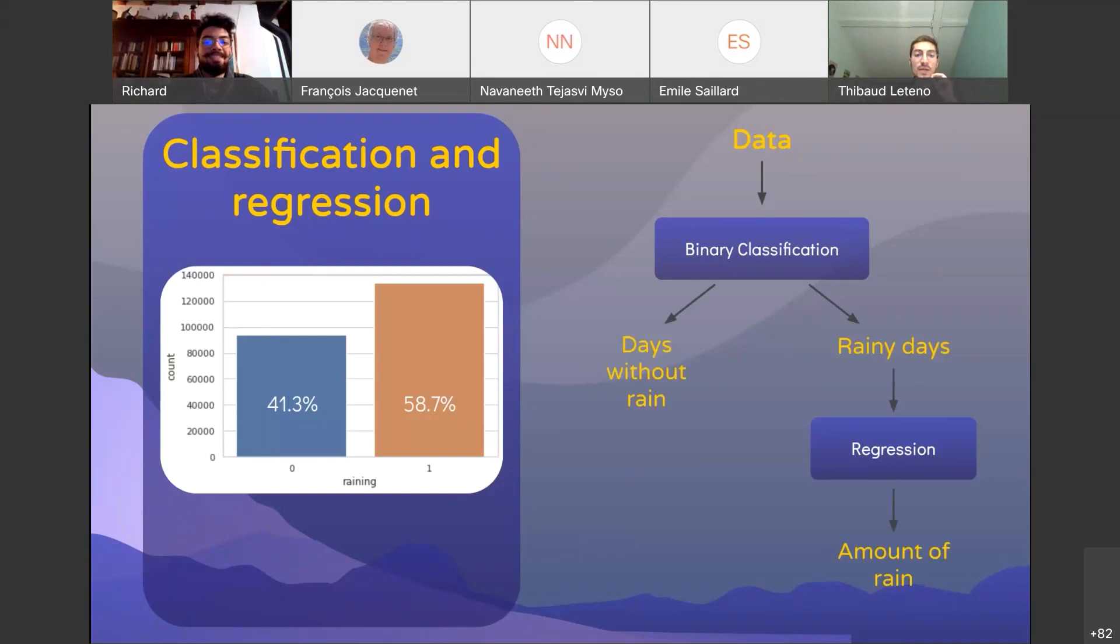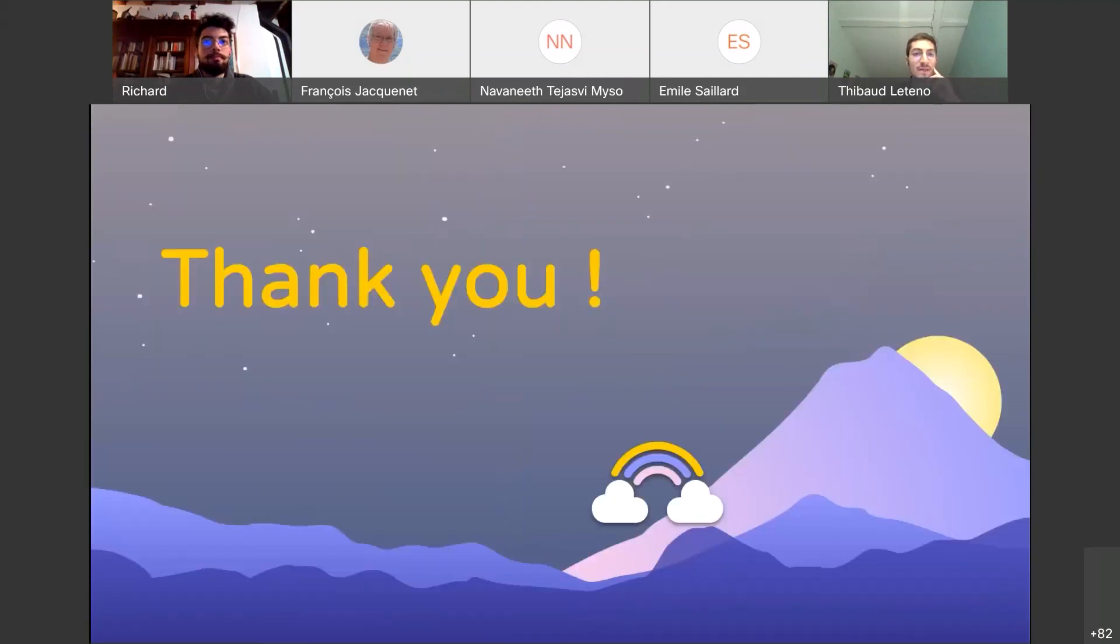And to do so, we tried different approaches, regression methods such as XGBoost using decision trees or polynomial regression, for example. But the best results were obtained using deep learning, both for binary classification and regression. Thank you for listening and don't hesitate if you have any questions.